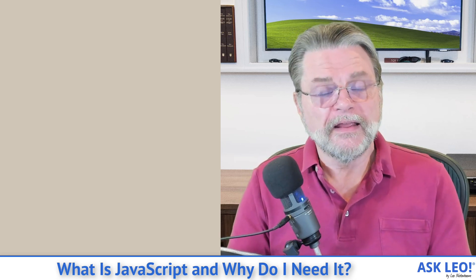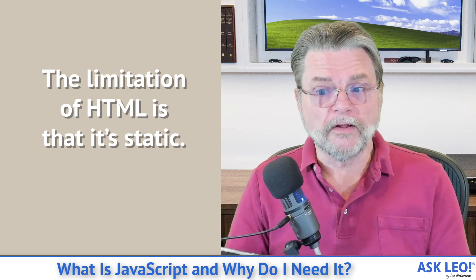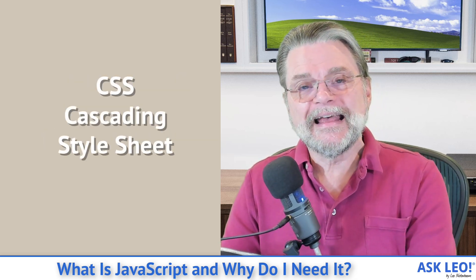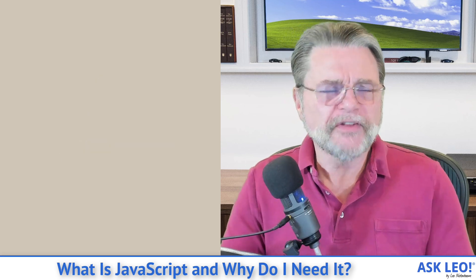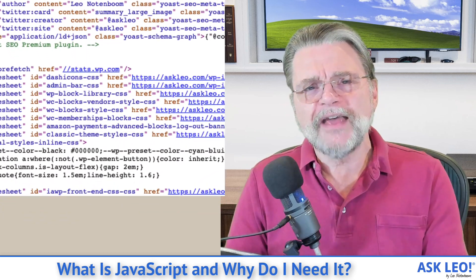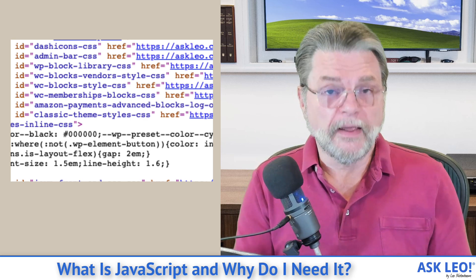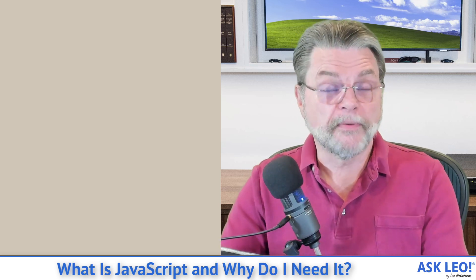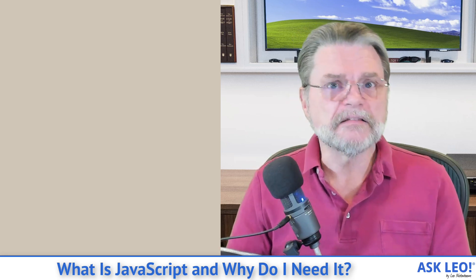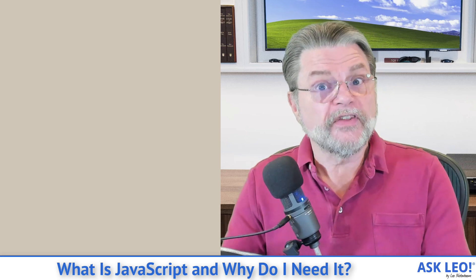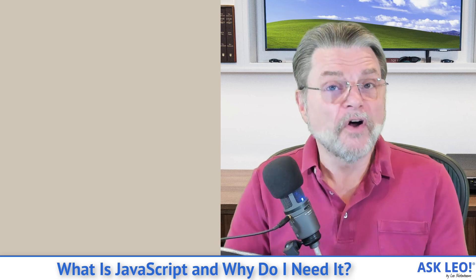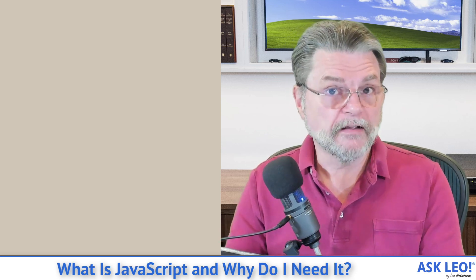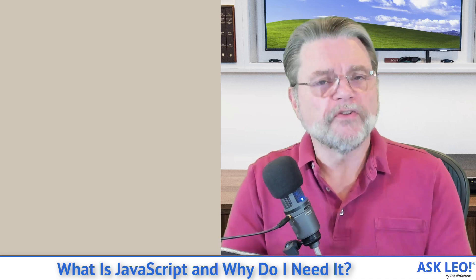Now, HTML by definition is static. In other words, if you're using only HTML, you display a page and that's it — the page doesn't change. Now, there is something called CSS. CSS is essentially a level above HTML. All it really does is abstract out the look of a page from the content. So while HTML specifies the contents of a paragraph, it's CSS that defines which fonts are used, how big they are, what the spacing might be. So: HTML — content, static. CSS — appearance, also generally static.